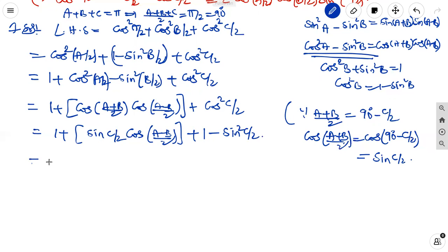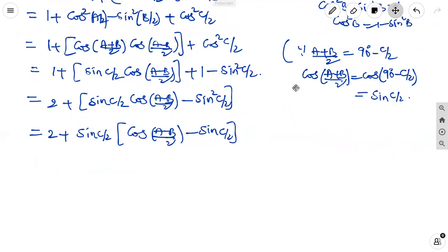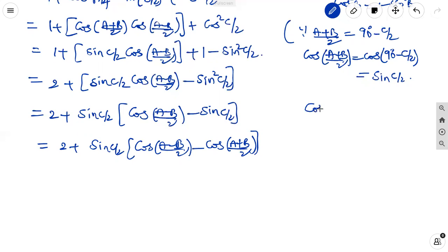So it equals 1 plus sin C by 2 into cos of A minus B by 2. And cos square C by 2 can be written as 1 minus sin square C by 2. So the left side becomes 1 plus 1 equals 2, plus sin C by 2 into cos of A minus B by 2, minus sin square C by 2. In these two terms, we can take sin C by 2 as common: sin C by 2 into cos of A minus B by 2 minus sin C by 2.